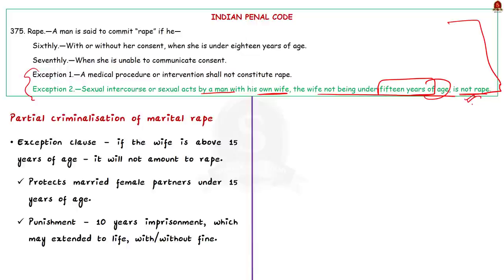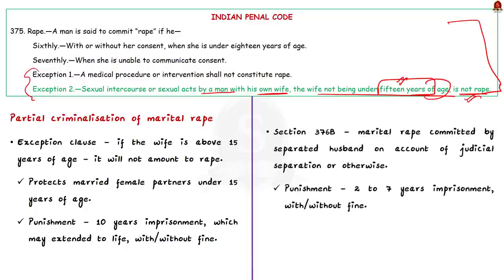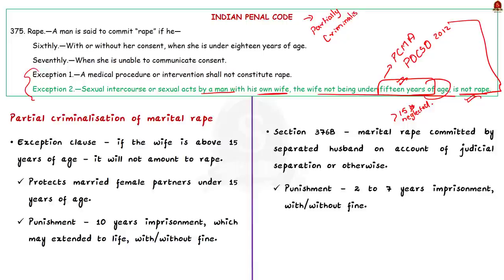Protection to married female partners exists in the IPC but only for married girl children under 15 years of age. Shockingly, this is already child marriage, so it is punishable under the Prohibition of Child Marriage Act 2006 and the Protection of Children from Sexual Offences Act 2012. The IPC neglects all women who are 15 years or above. Even after more than 70 years of independence, the Indian Parliament has not corrected this flaw, which is why many say Indian law does not criminalize marital rape.